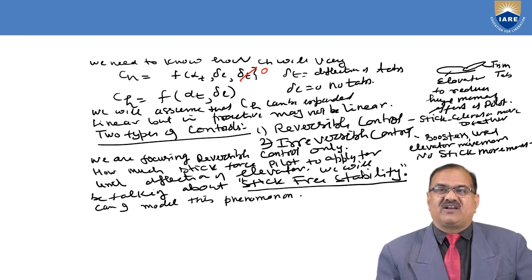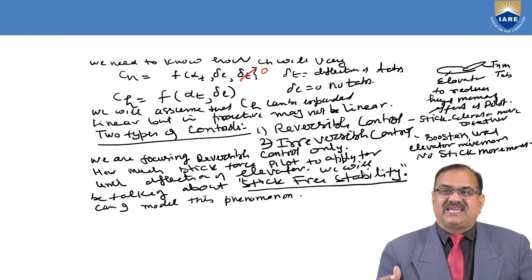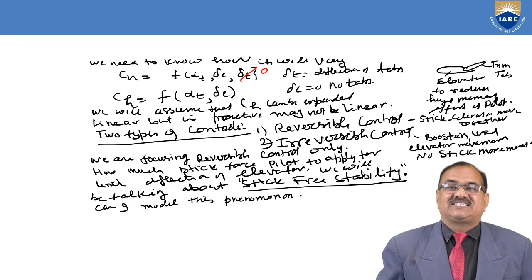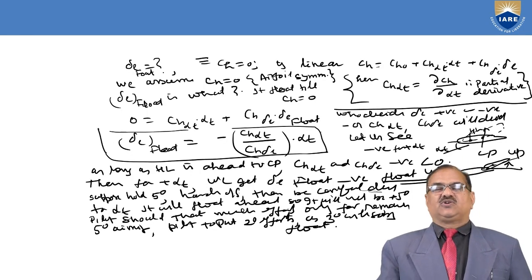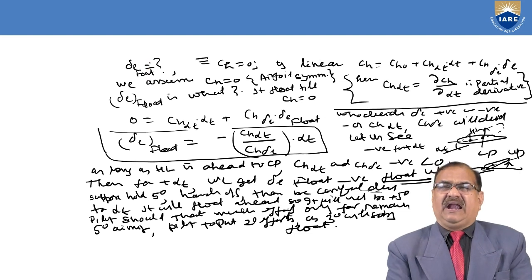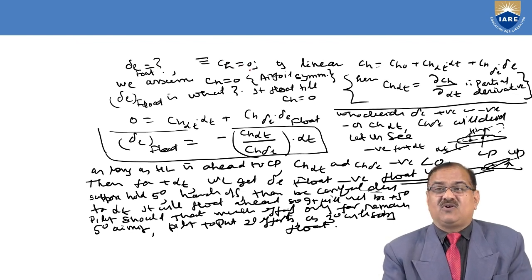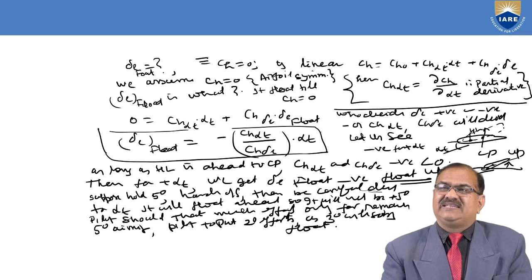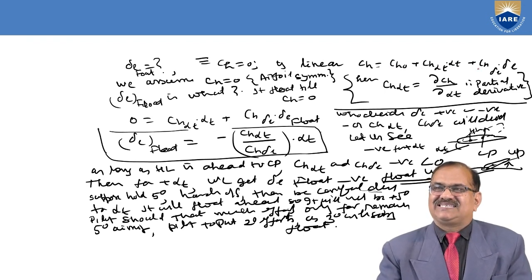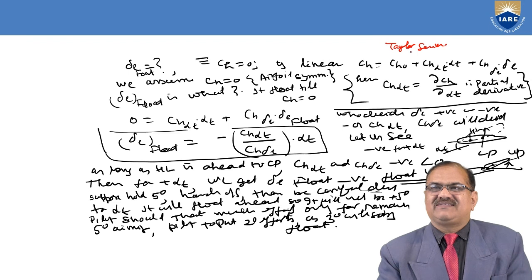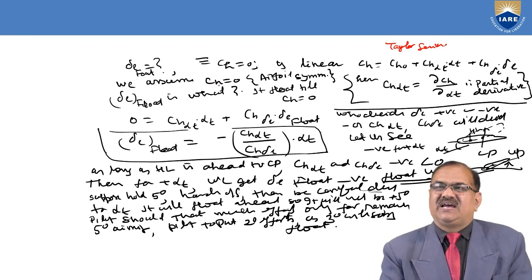Nowadays irreversible controls use boosters and electrical/mechanical devices. We focus on reversible controls to determine how much stick force the pilot must apply for elevator deflection. For modeling stick-free stability, we find delta_e_float by setting Ch equal to zero: Ch_alpha_t * alpha_t + Ch_delta_e * delta_e_float = 0.